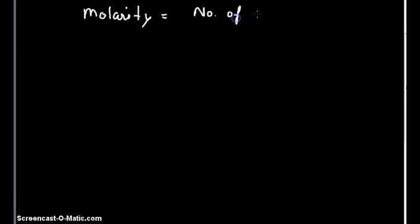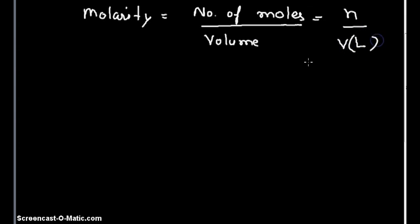Now using the formula of molarity, which is number of moles, that is equal to n divided by volume in liters. Plugging in the values, one mole divided by 0.5 liters, and the answer we get is 2 M. That is the unit is moles per liter.